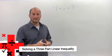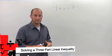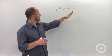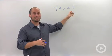We're now going to talk about different ways of writing a three-part inequality. So right now we're just going to focus on negative 1 is less than or equal to x which is less than 3.